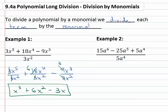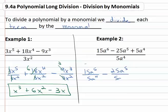Let's look at one more example where we divide each term by the monomial. We have 15a to the sixth minus 25a to the fifth plus 5a to the fourth all divided by 5a to the fourth. So we'll start dividing each term. 15a to the sixth over 5a to the fourth minus the 25a to the fifth is put over 5a to the fourth.